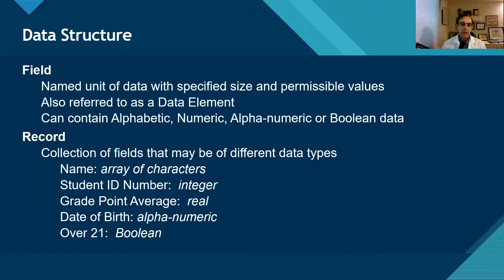From there, we move on to fields. These are named units of data, and they have a specific size and permissible values. They're also called a data element, and they can contain either alphabetic, numeric, alphanumeric, or Boolean data types.